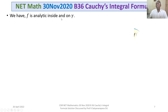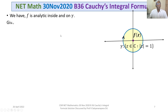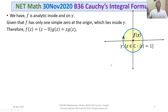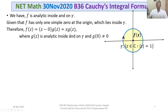We have f analytic inside and on gamma, and f has only one simple zero at the origin, that is Z equals 0, which lies inside gamma. Then f(Z) can be written as Z times g(Z), because it is a simple zero at Z equals 0. Here g(Z) is analytic inside and on gamma, and g(0) is not equal to 0.